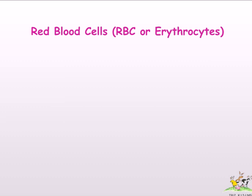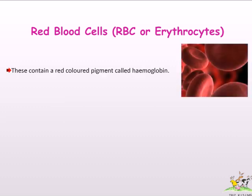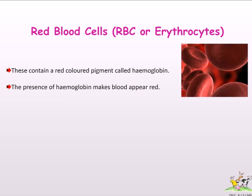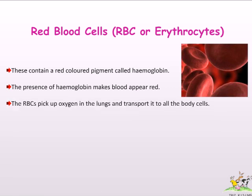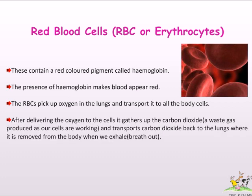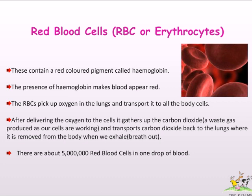Red blood cells (RBC), or erythrocytes, contain a red-colored pigment called hemoglobin. The presence of hemoglobin makes blood appear red. The RBCs pick up oxygen in the lungs and transport it to all the body cells. After delivering the oxygen, they gather up carbon dioxide — a waste gas produced as cells work — and transport it back to the lungs, where it is removed when we exhale. There are about 50 lakh red blood cells in one drop of blood.